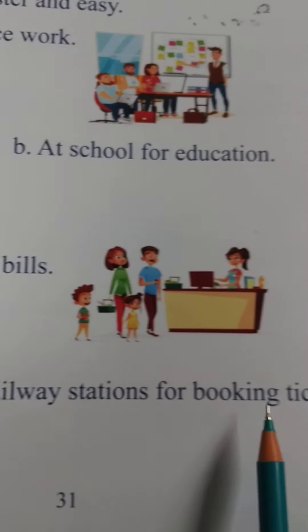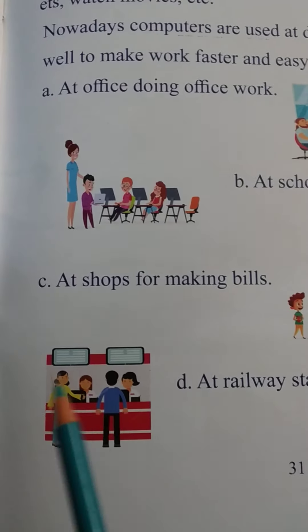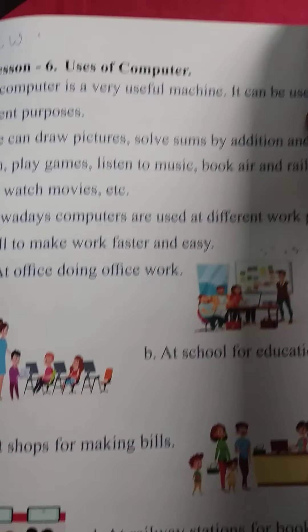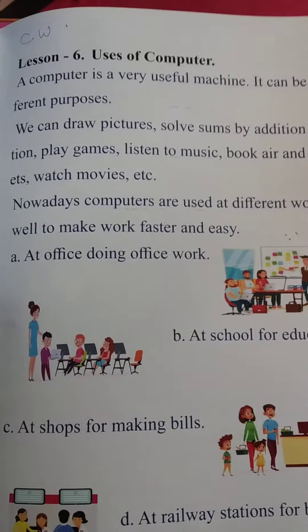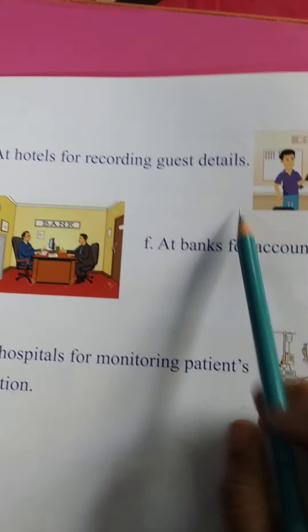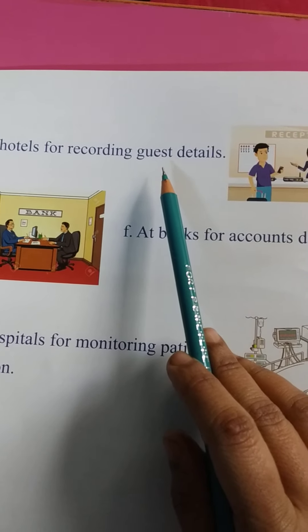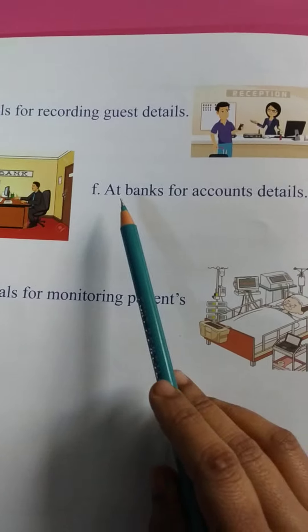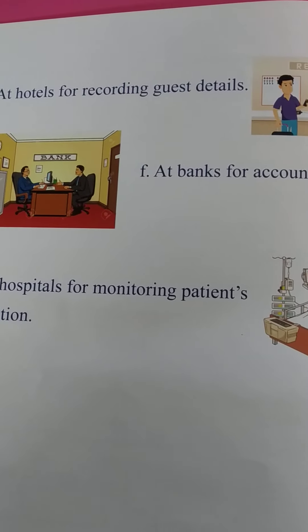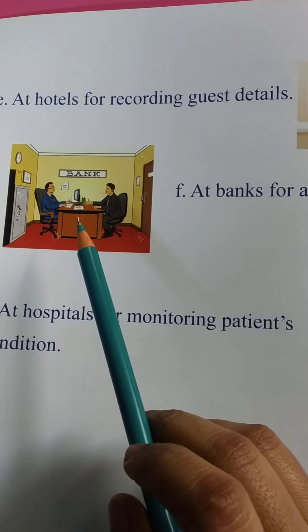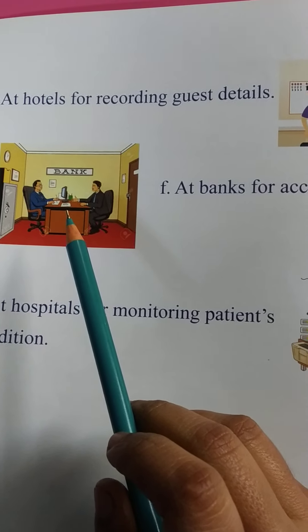At railway stations, computers are used for booking tickets — both at railway stations and airports. At hotels, computers are used for recording guest details. At banks, computers are used for keeping account details.